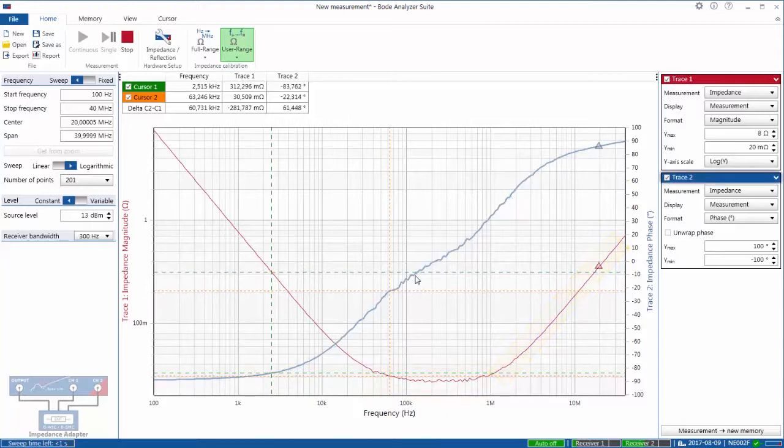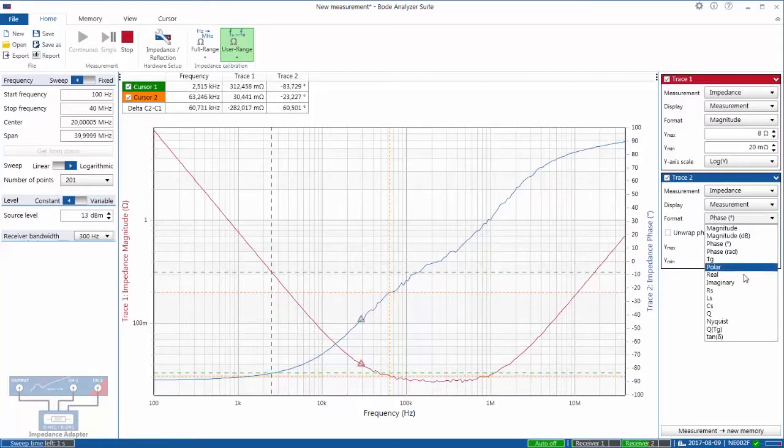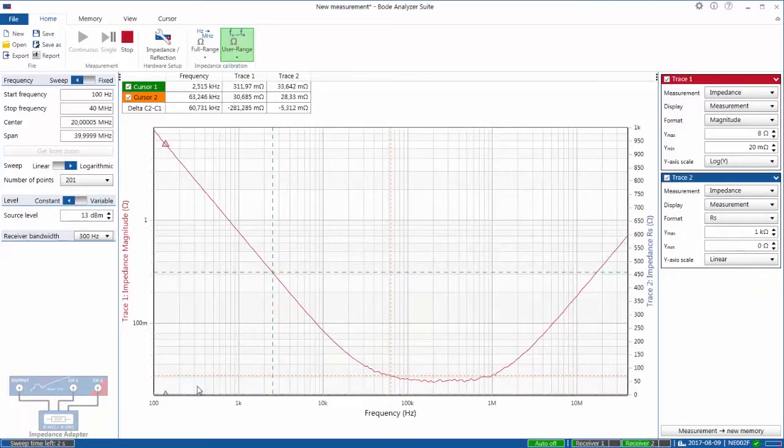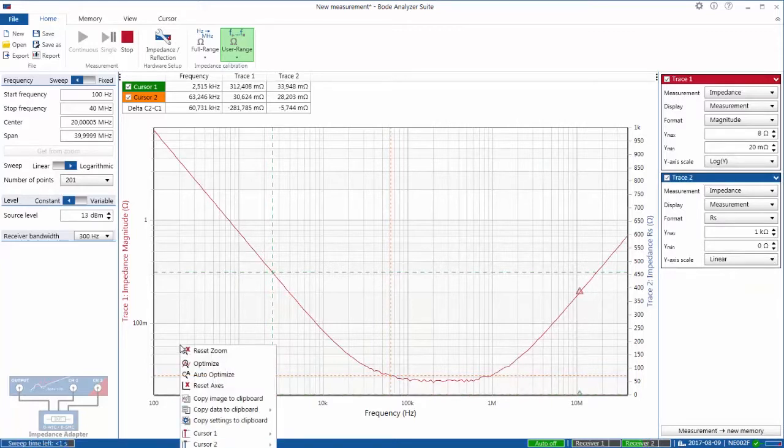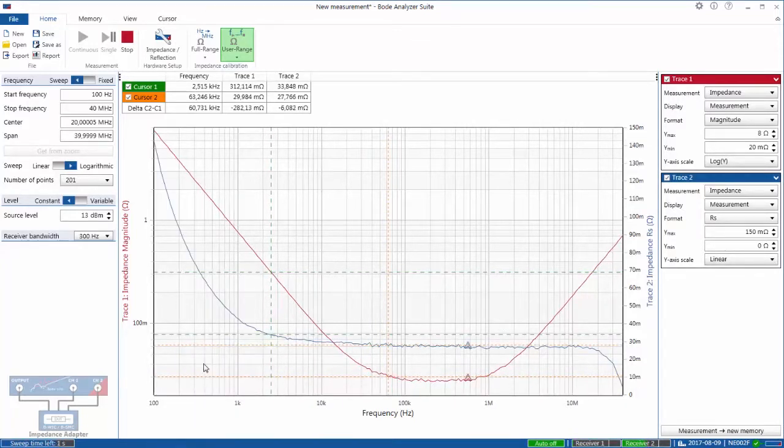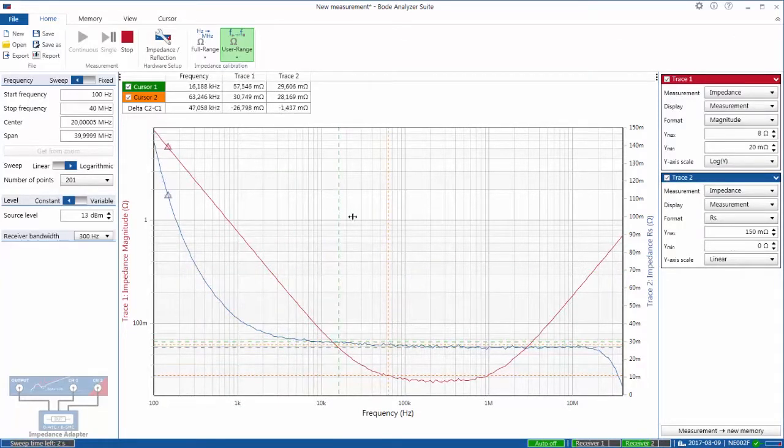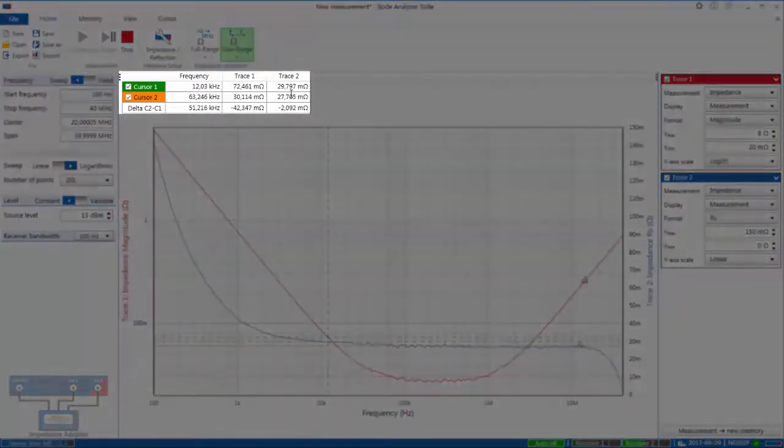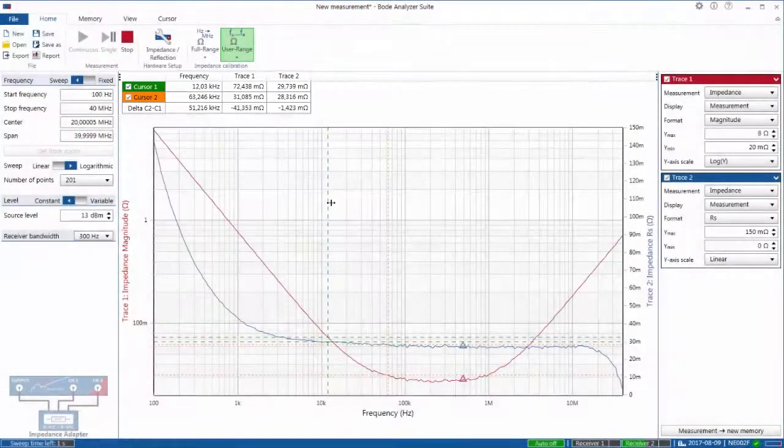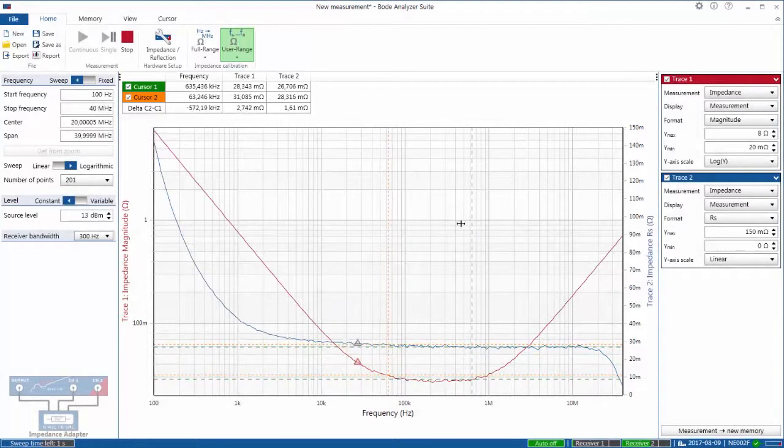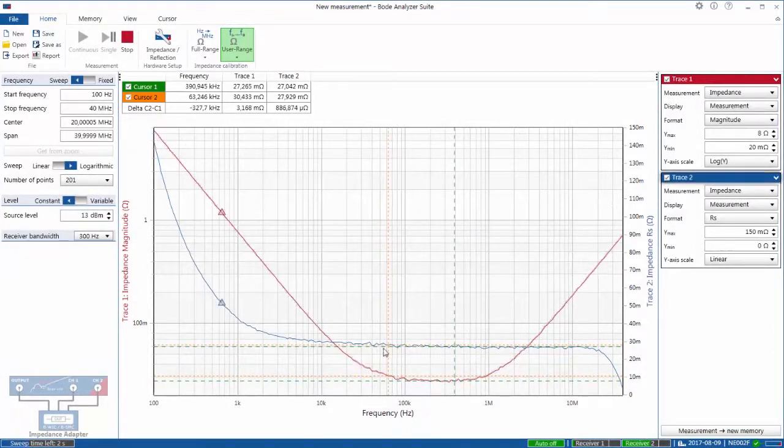So this is the phase information but I can change that and display the resistance because I'm interested in the ESR. So if I click on that it is now displaying the ESR down here. I right click and I optimize the scales and I can see the ESR and now you can see with the cursors that the ESR is displayed around here and it is relatively flat for this particular electrolytic capacitor around this range.